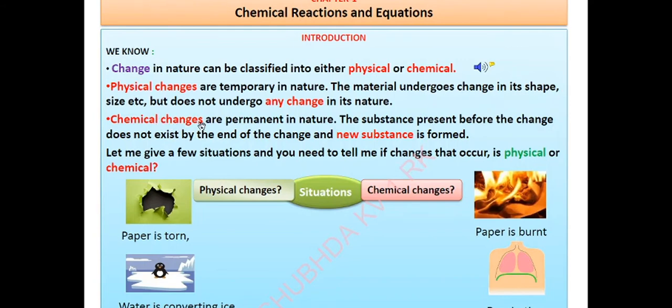In physical changes, the nature of the original substance does not change. While in chemical changes, a new substance is formed. As you can see, I have highlighted these points in the PDF. For example,